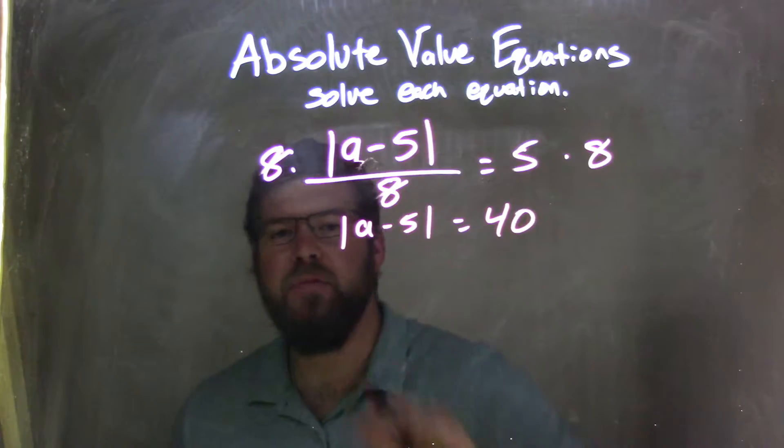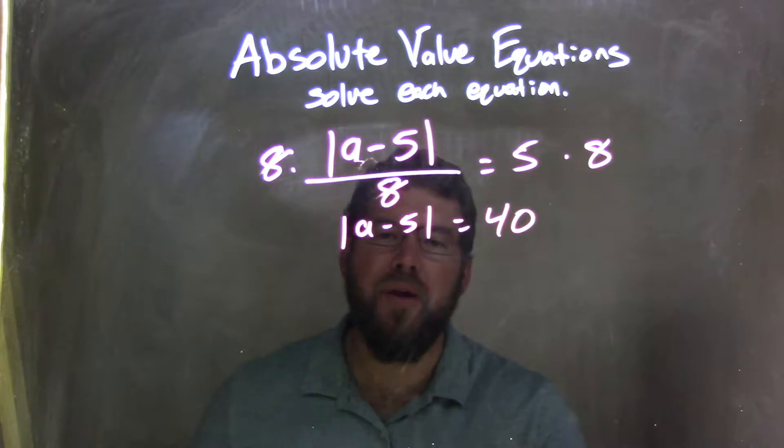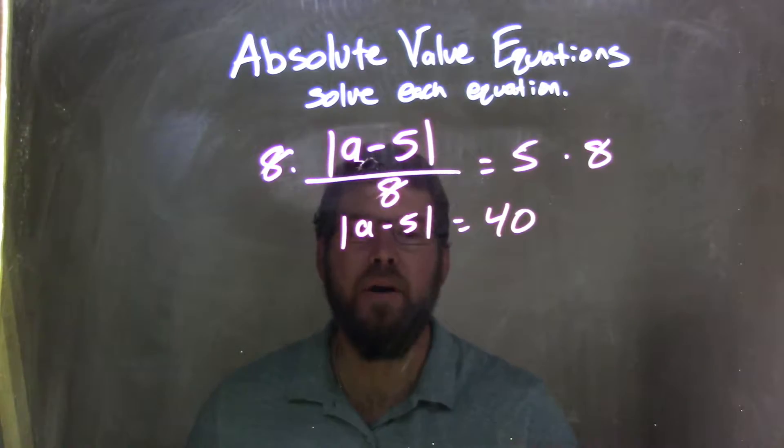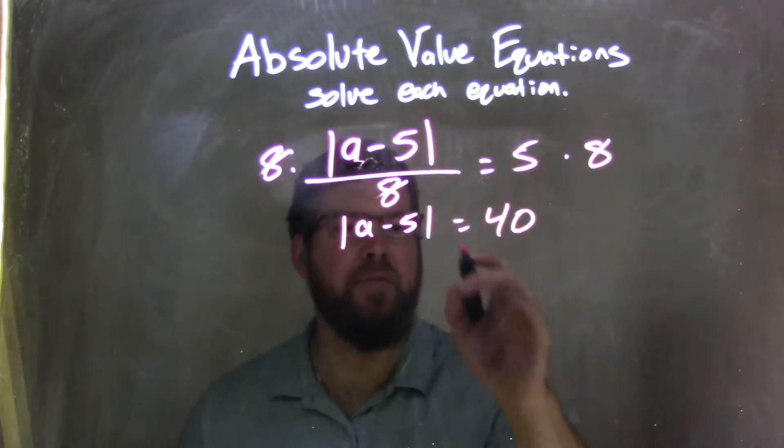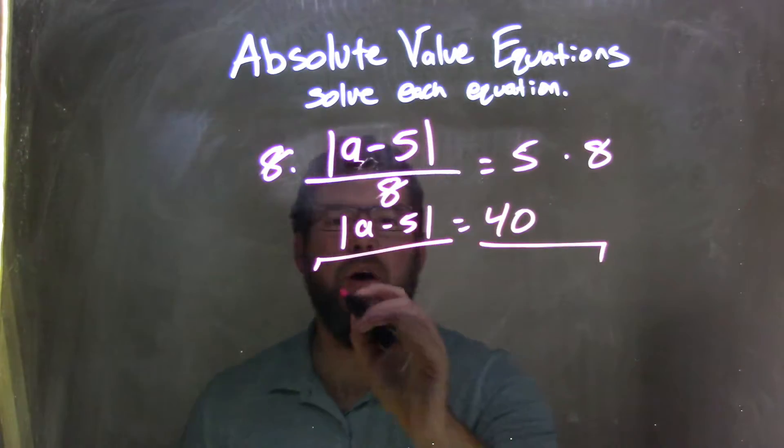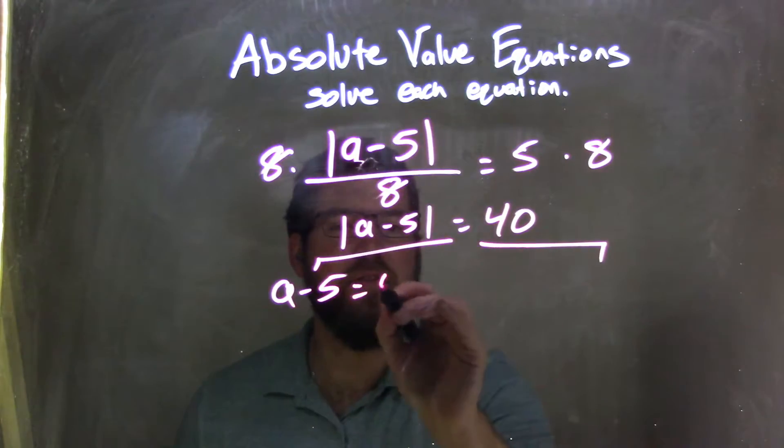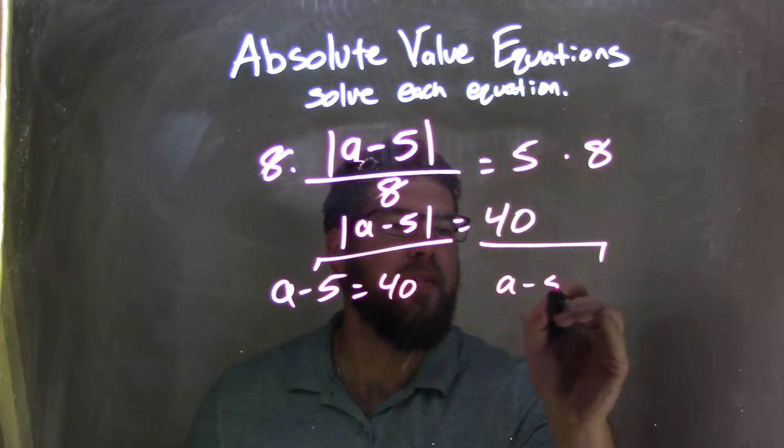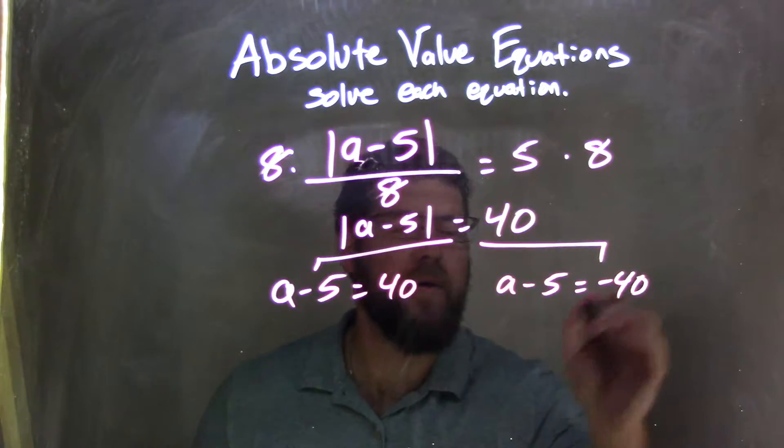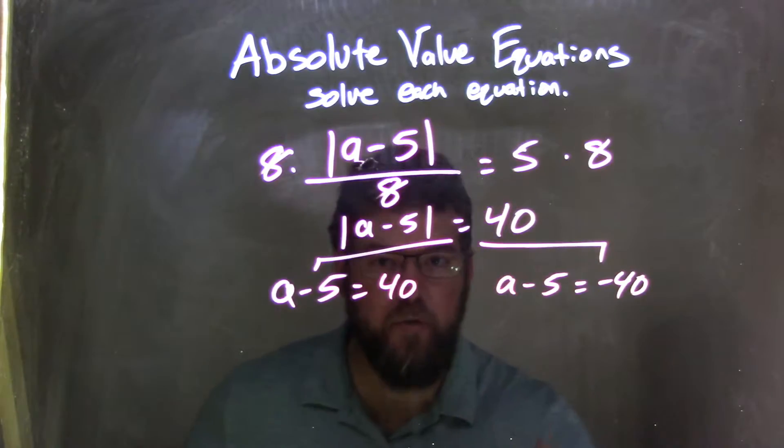At this point, the absolute value is isolated, so now I can break this equation apart into two equations, eliminating the absolute value. That leaves me with a minus 5 equals positive 40, and a minus 5 equals negative 40. Now I need to solve each equation individually.